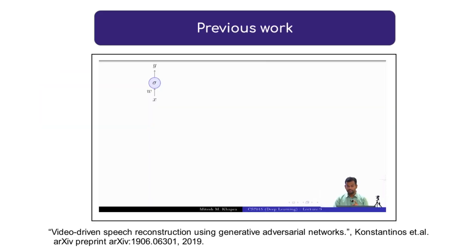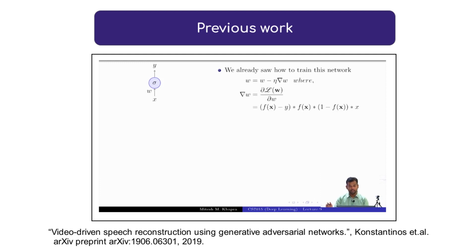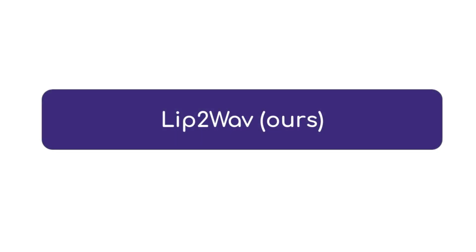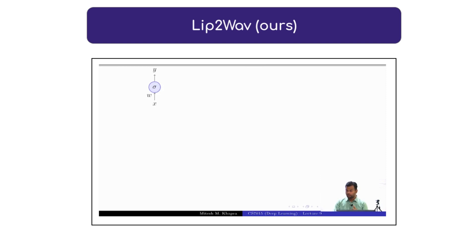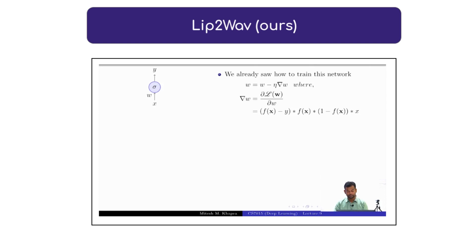So we already saw how to train such a very shallow neural network. What is the learning algorithm? Gradient descent. And this was the update rule. In particular, what you notice is that the gradient actually depends on the input.